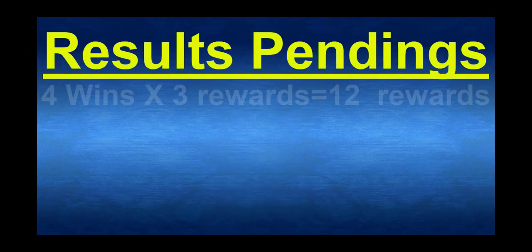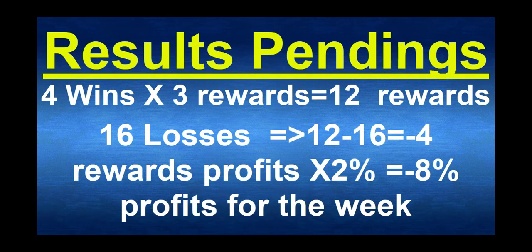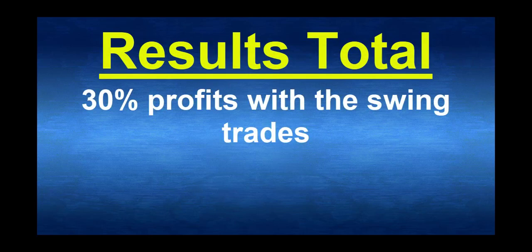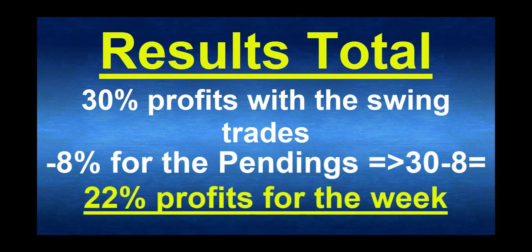Total account for pending orders: 4 wins and 16 losses. That means 4 wins times 3 rewards equals 12 rewards minus 16 losses equals minus 4 risk, which makes minus 8%. I think that's the first week we are in minus, and it is because of the black swan event of the Brexit on Thursday and Friday. Overall: 30% profit with the swing trading strategy and minus 8% for the pending orders, which makes 22% profit for the week all in all. Which is still great — you still make profit.